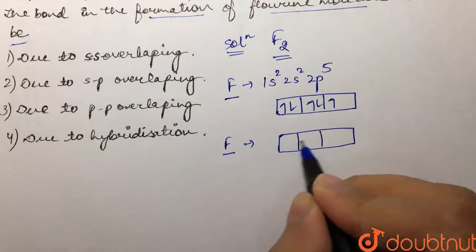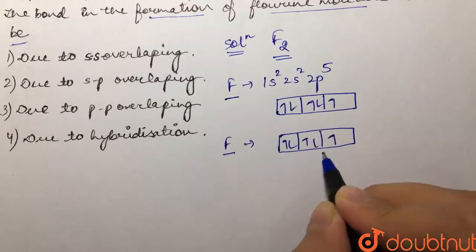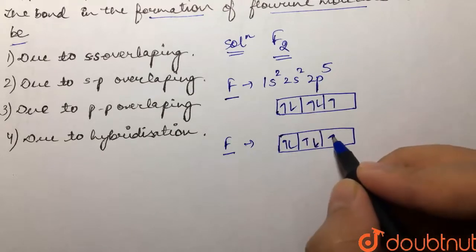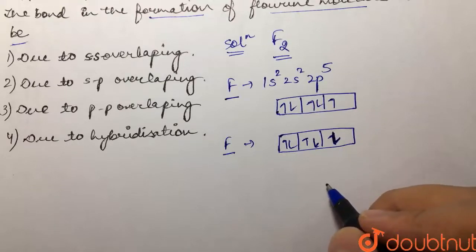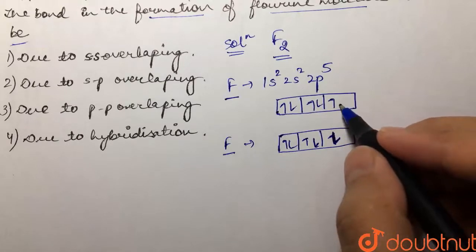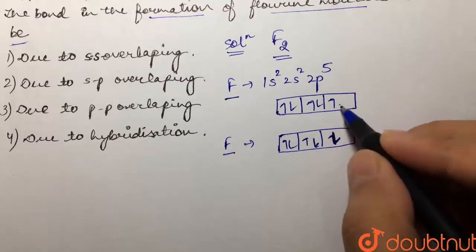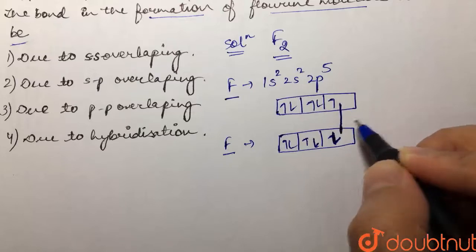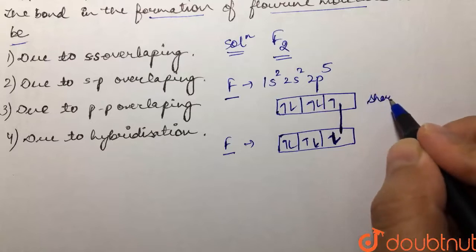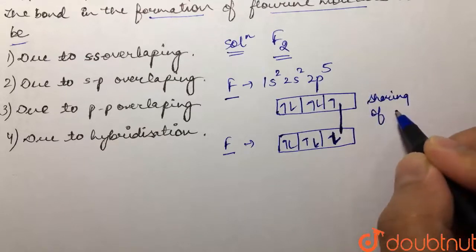Or we can draw it like this. So what happens over here is that these two unpaired electrons, they basically... there is sharing of these two electrons in our fluorine molecule.